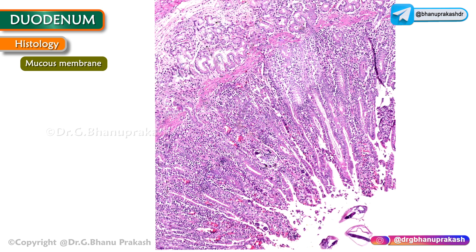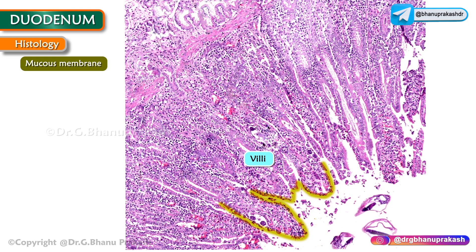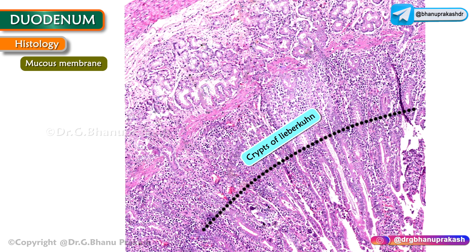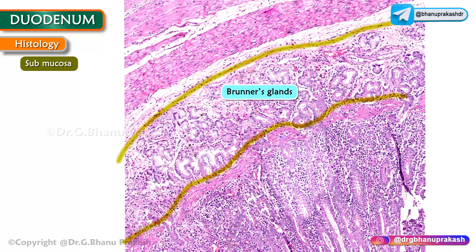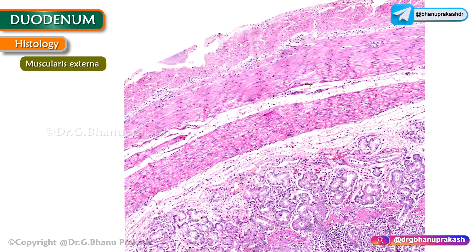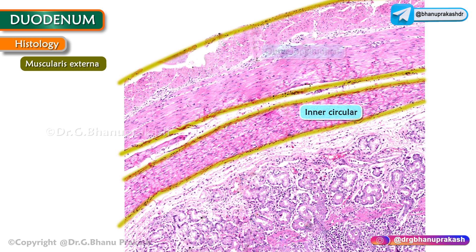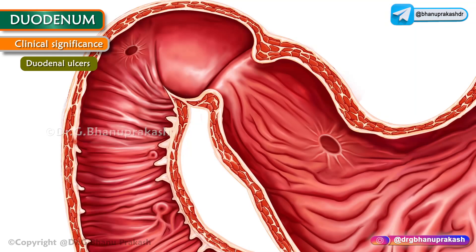The muscularis mucosa contains two layers of muscle. The submucosa mainly contains mucus-secreting Brunner's glands. The muscularis externa contains an outer longitudinal and an inner circular layer of muscle fibers.